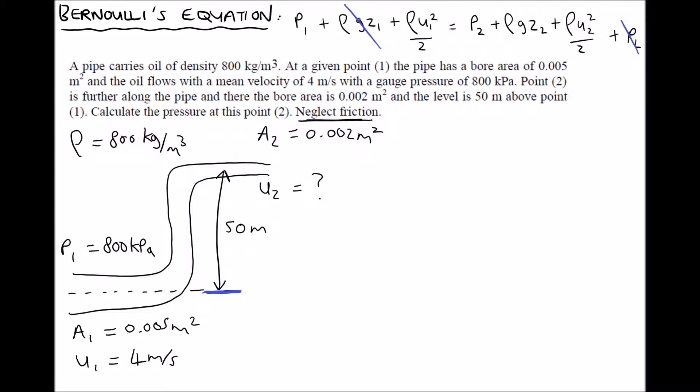So one of the first steps here is to calculate U2. We need to calculate U2 before we can calculate P2. And we can use the continuity equation for this, because we know that U1 A1 equals U2 A2. Now from our question, we were given values for A1 and A2, and we were given a value for U1. So let's rearrange this formula to make U2 the subject. And to get U2 on its own, all we need to do is divide each side by A2.